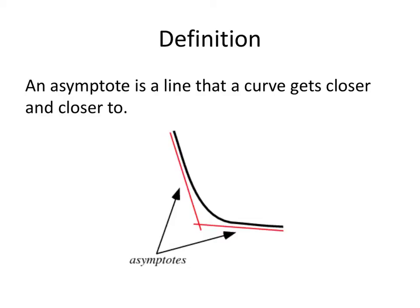So in this picture, we've got our curve, which is in black, and then our asymptotes are colored in red. The idea is that as we travel along our curve, we are getting closer and closer to this red line in both directions. So that's the basic idea of an asymptote.